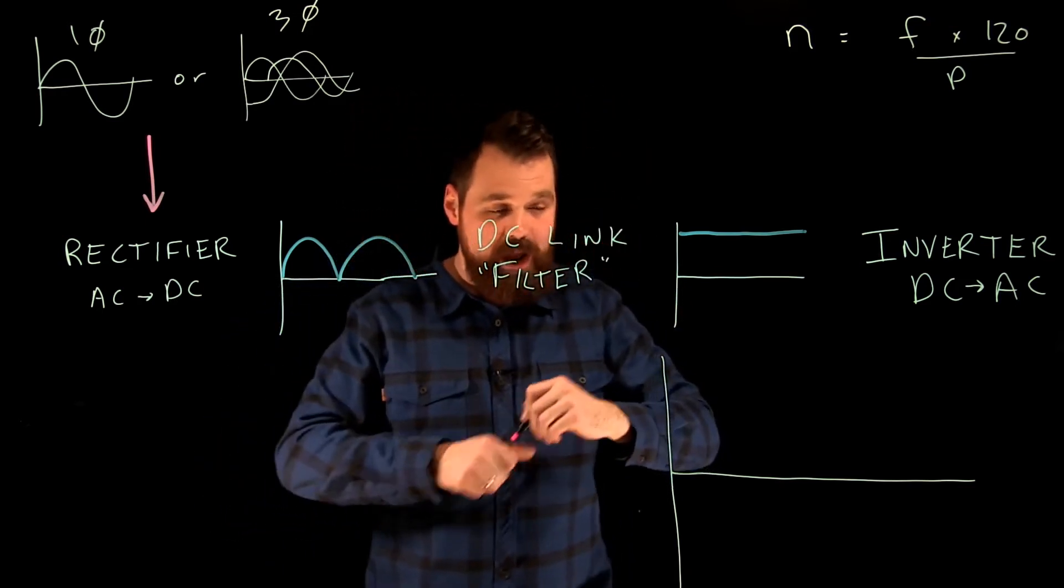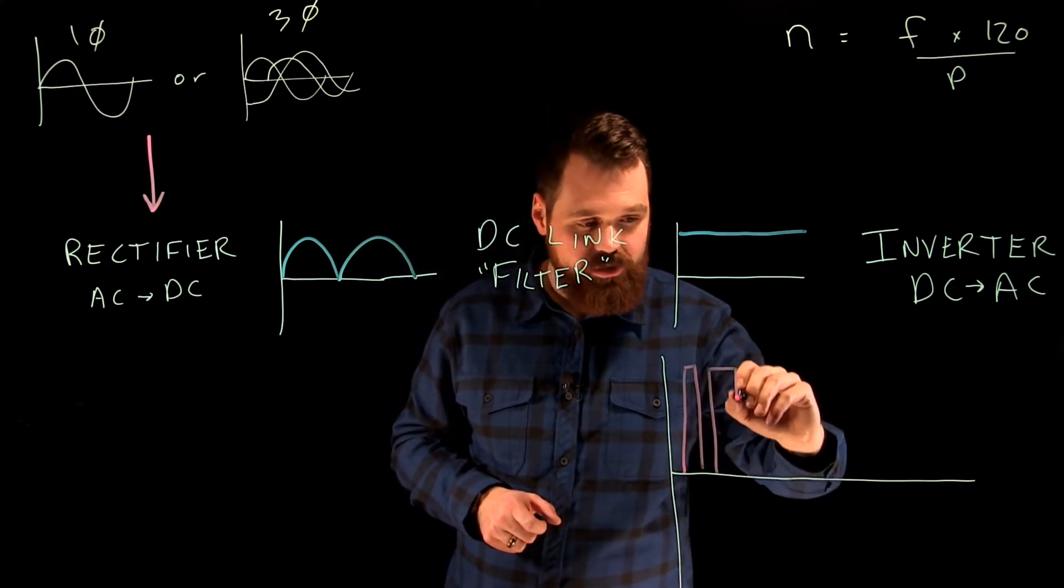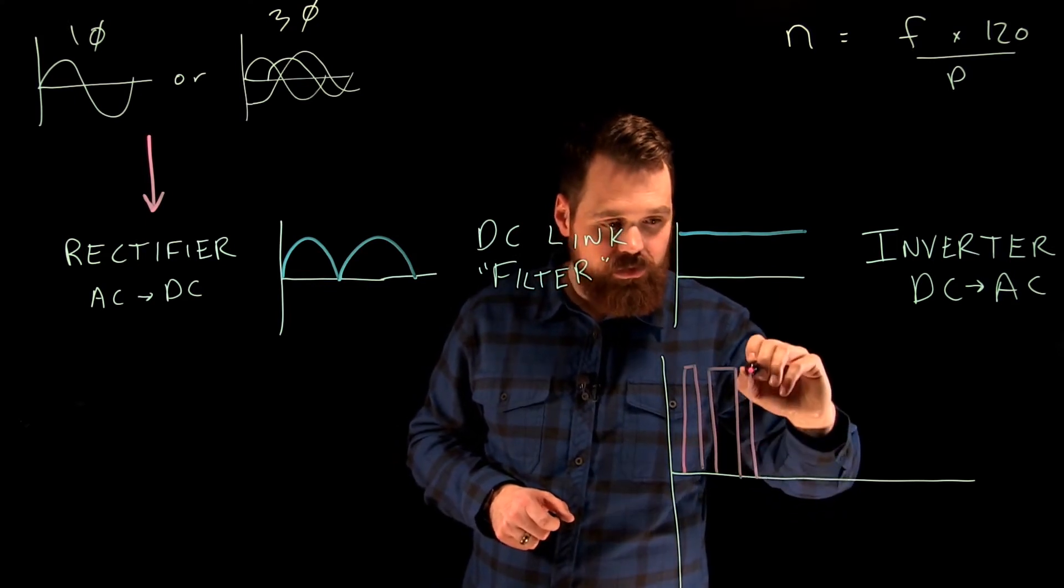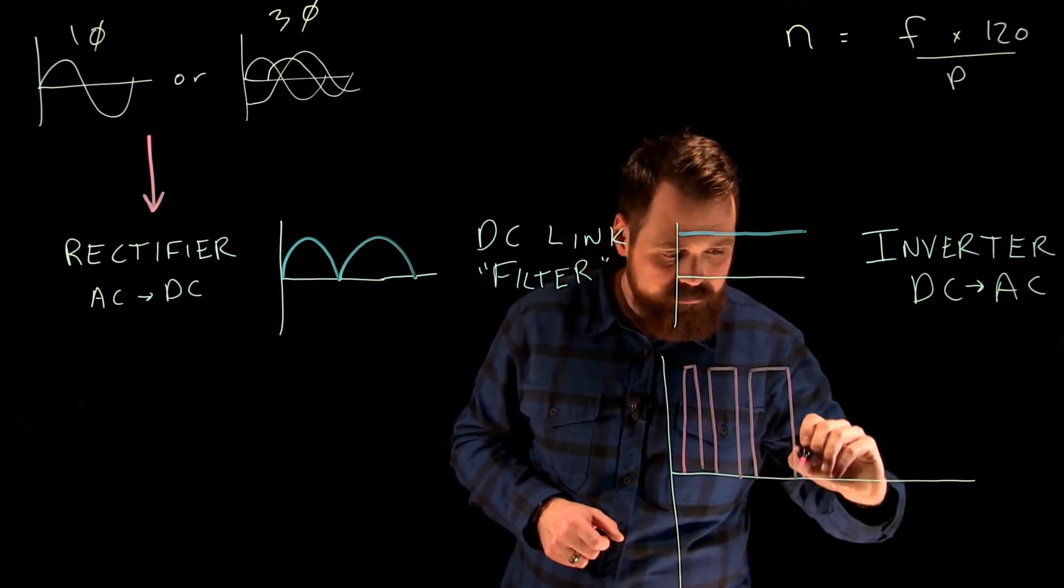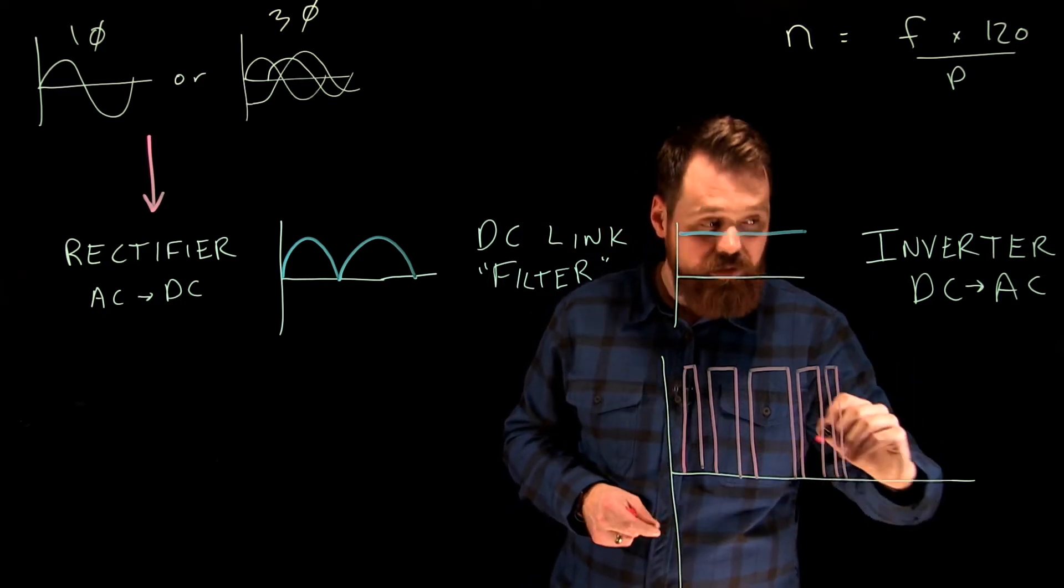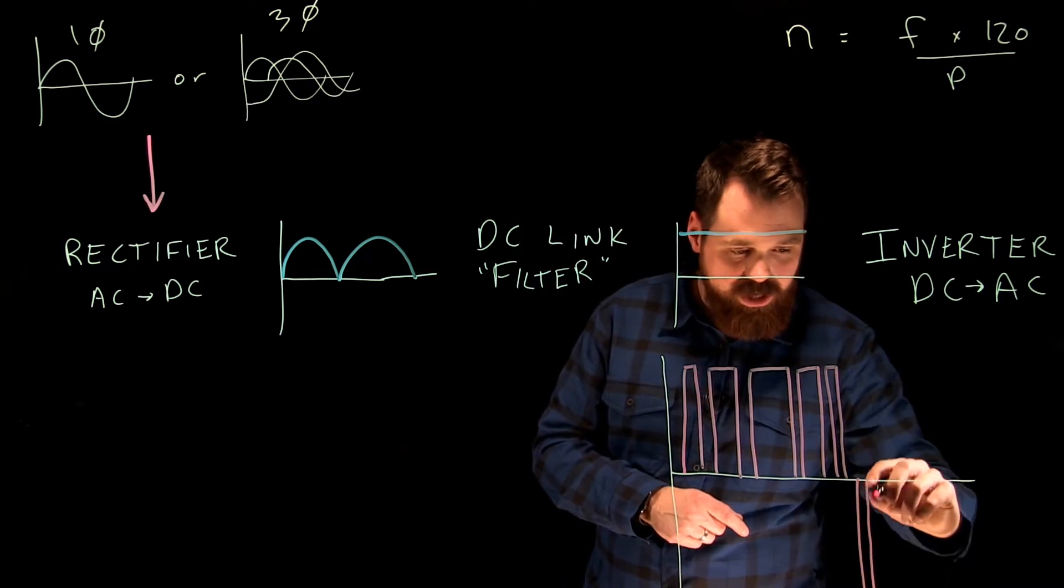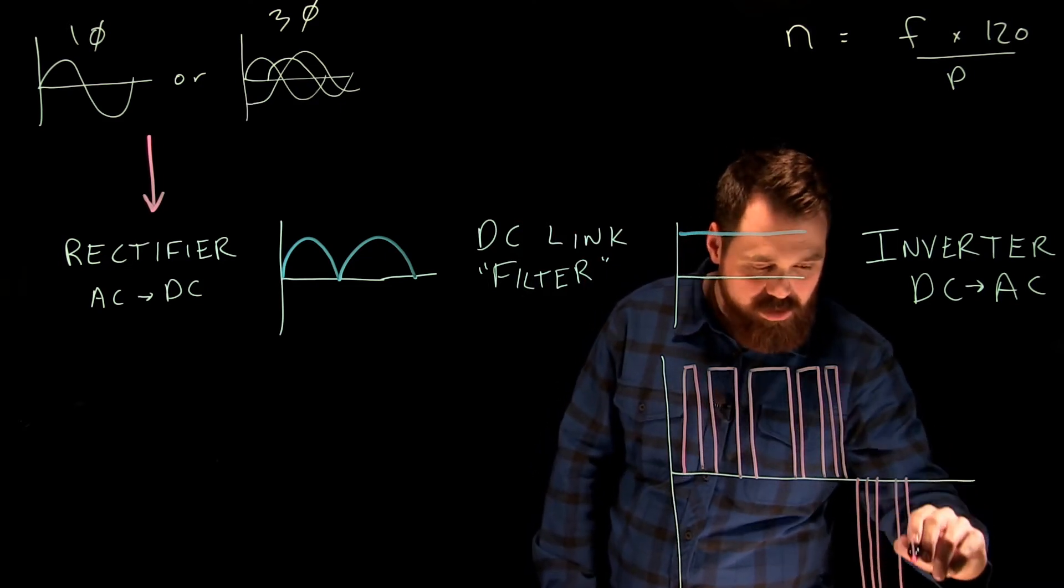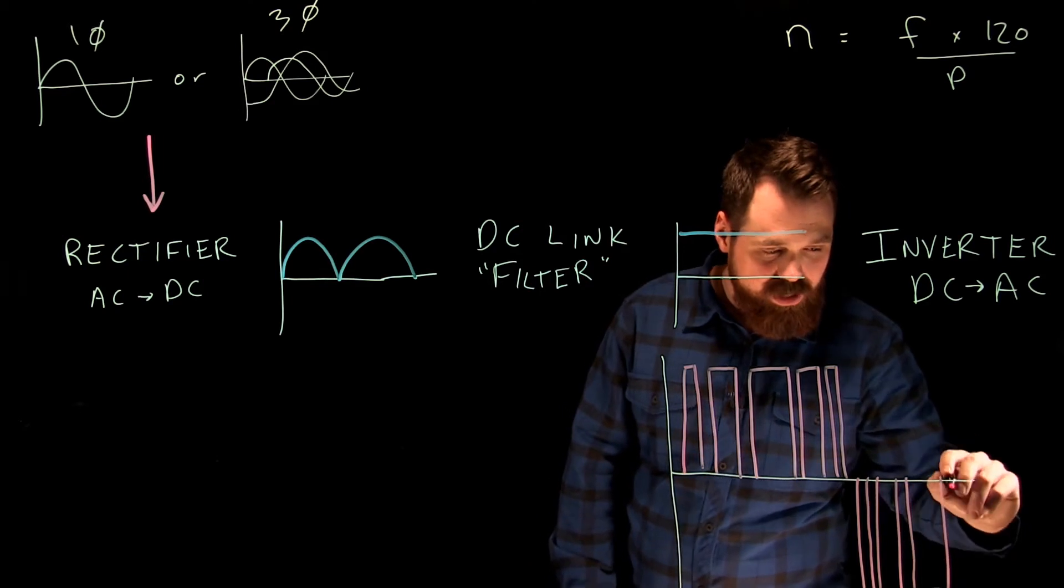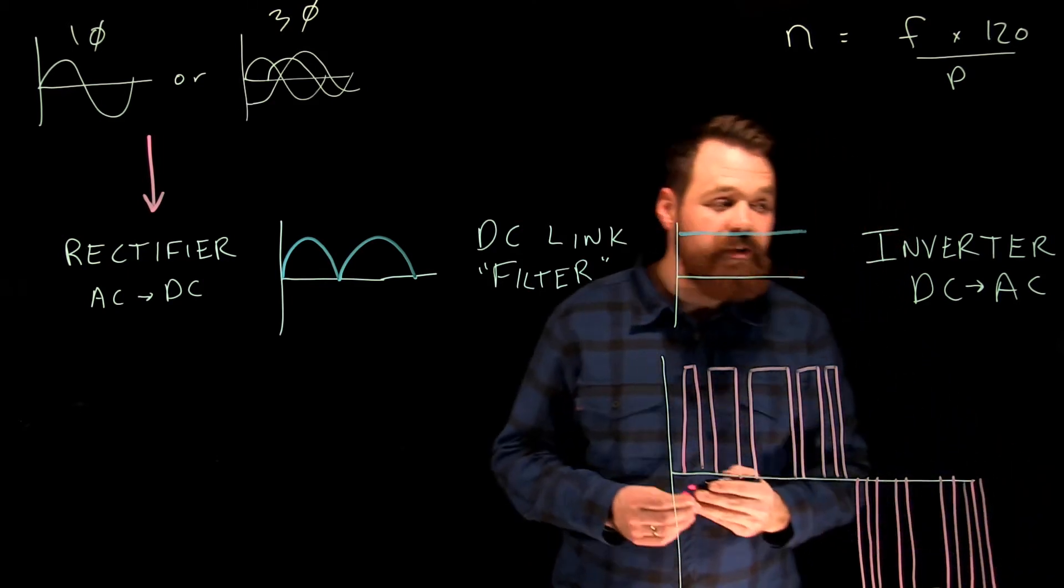Basically what happens is we will pulse it on for a short period, off, then on longer, off, on longer, off, on a bit, on shorter, and then we'll do it in the opposite direction—on, off, on, off, on for longer, off, on, something like that.